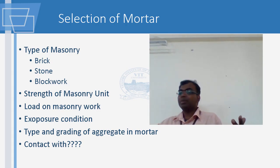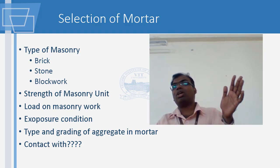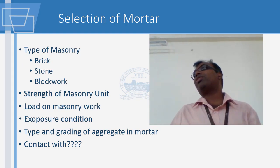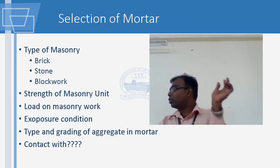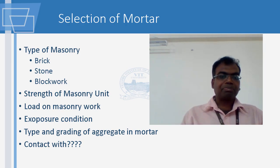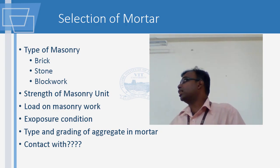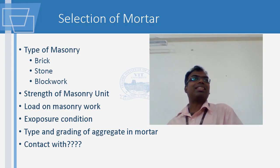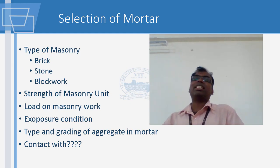Do you think the exposure condition of the mortar on the inside of this wall and outside is the same? No. The outside is exposed to sun, pollution, and water. All these things are coming into contact with the mortar which is outside. You will find that the specification for external plastering will call for thicker coats - there will be multiple layers compared to the inside.